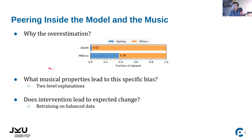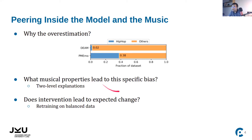A more nuanced question is: what musical properties in hip-hop songs lead to this specific bias? For this we introduce a method of two-level explanations, which I will describe in the following slides. This method helps us answer that question and also helps us verify whether retraining the model on balanced data produces the expected change.